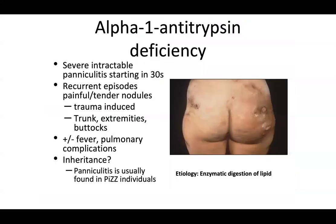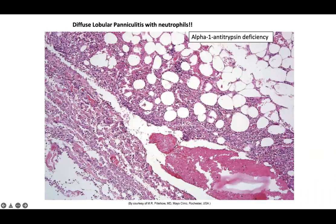Alpha-1 antitrypsin deficiency presents with severe, intractable paniculitis starting in the thirties. The etiology is enzymatic digestion of lipid. Patients have recurrent episodes of painful tender nodules induced by trauma, seen on the trunk, extremities, and buttocks, with or without fever and pulmonary complications. This inheritance is due to a PIZZ mutation. If you see lobular paniculitis with lots of neutrophils, think alpha-1 antitrypsin deficiency, but also infectious paniculitis — do bug stains and tissue cultures.